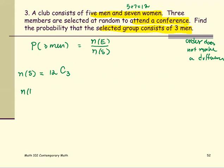And N(E). We're going to need only men, or three people from the men group. So we have five men, and we're going to choose three from this group.